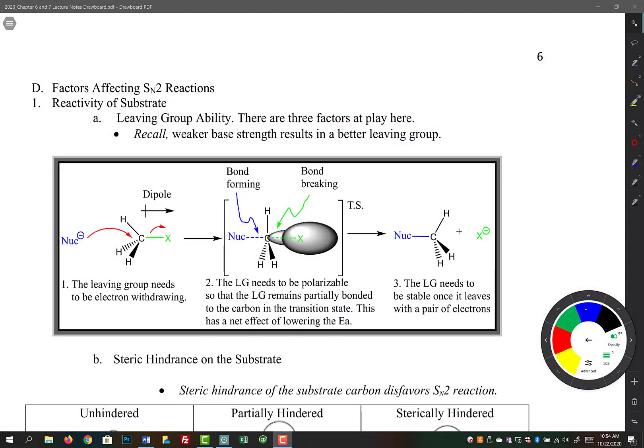There's a few factors that affect the rate of an SN2 reaction. The first one is the reactivity of the substrate. That has to do a lot with the ability of the leaving group to leave. There's three factors at play during that process. And recall, as we go through this, recall that a weaker base strength results in a better leaving group. Weaker bases are better leaving groups.